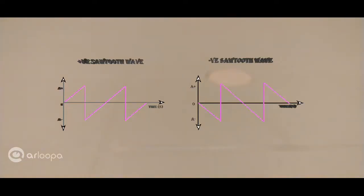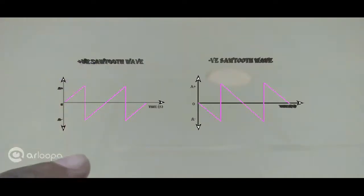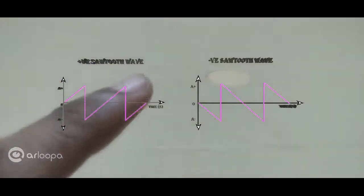There are two types of sawtooth waves. One is a positive sawtooth wave and the other is a negative sawtooth wave. In case of a positive sawtooth wave, the wave ramps upward and then sharply drops and then this cycle repeats on and on.